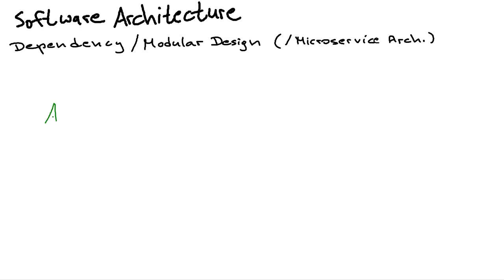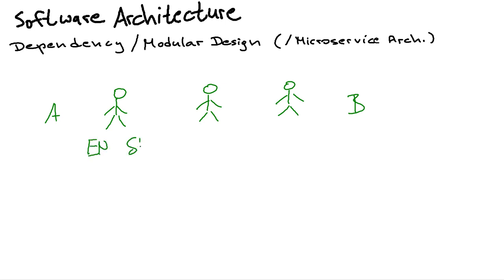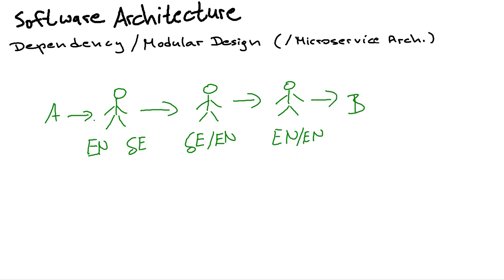Okay, imagine you have some point A and some point B and you want to convey a message from A to B, and to do that you have a chain of people who speak different languages. The first one can only listen to English and can only speak German. The second one speaks German and English. The last one speaks only English. And the communication flows in this direction — so guy number one, guy number two, and guy number three.